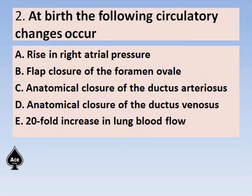Question number 2: At birth, state whether each of the following circulatory changes is true or false. Rise in right atrial pressure; flap closure of the foramen ovale; anatomical closure of the ductus arteriosus; anatomical closure of the ductus venosus; 20-fold increase in lung blood flow.